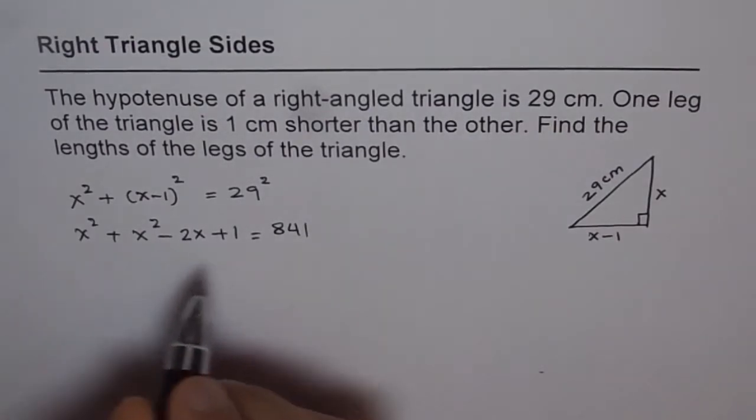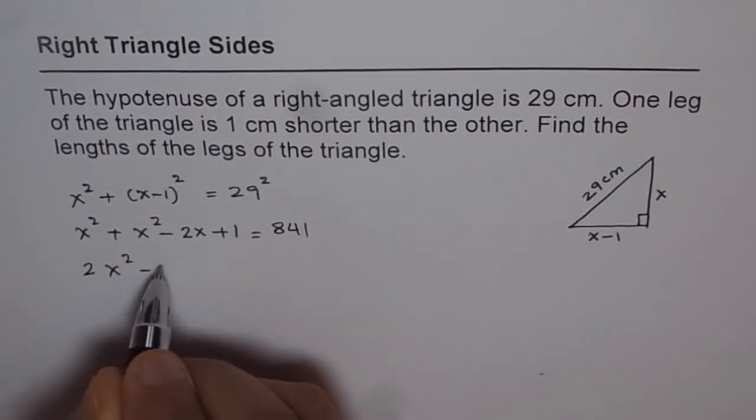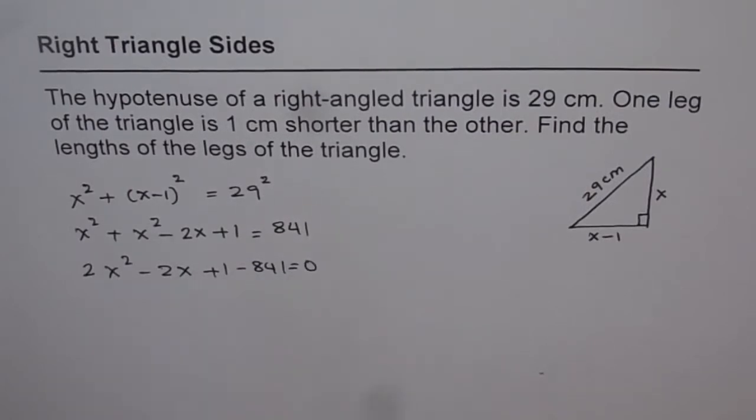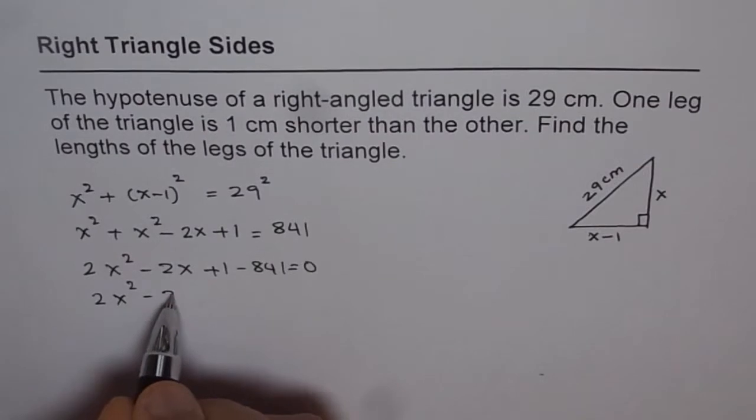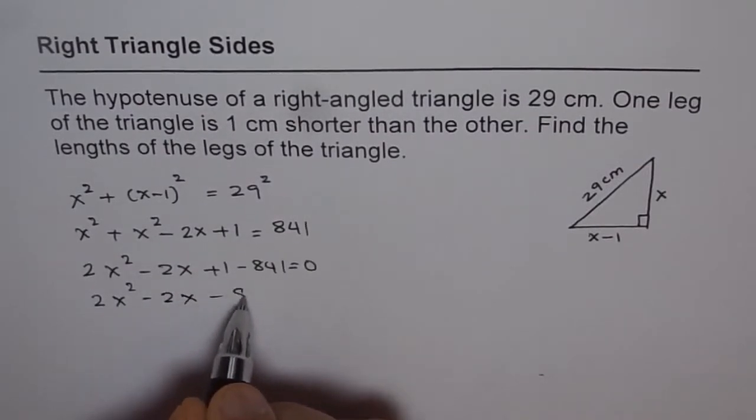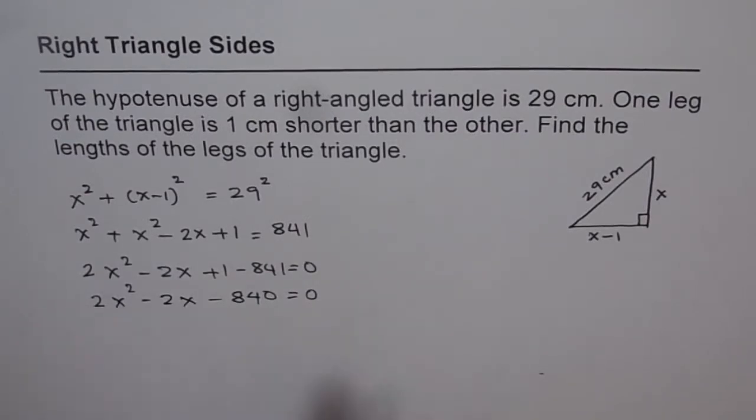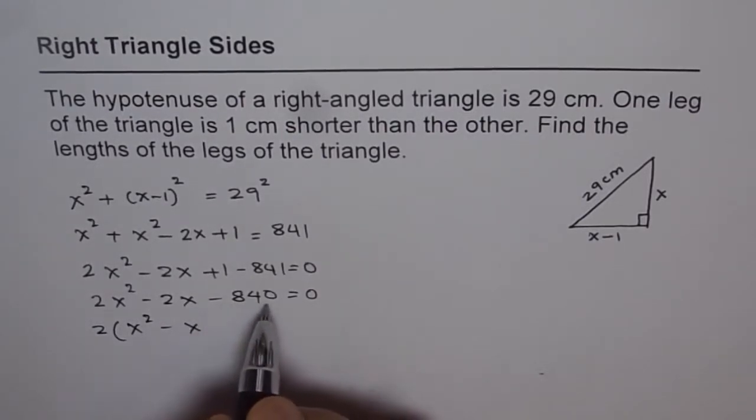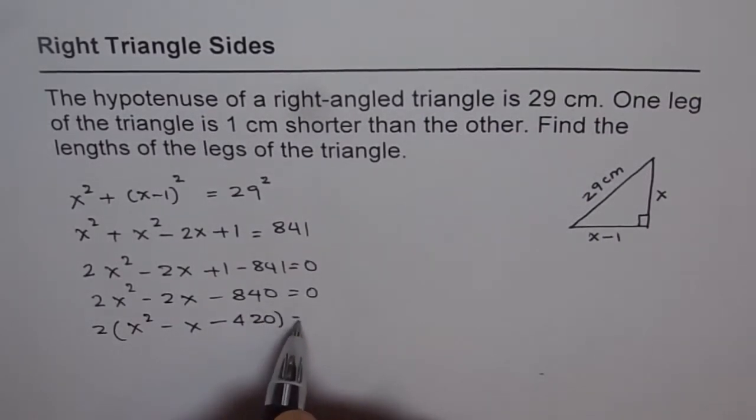Now bring all the terms together and then solve. So we get 2 times x squared minus 2x plus 1 minus 841 equals to 0. Now we can factor out 2 from here. So we get x squared minus x. Dividing by 2 we get minus 420 equals to 0.